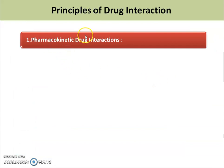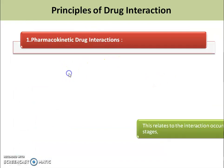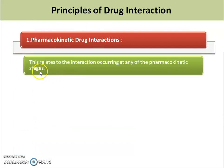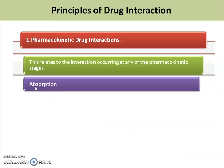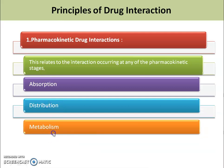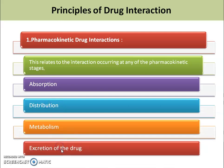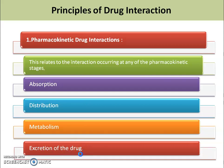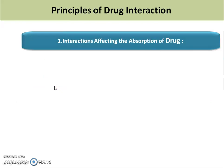First, we see the pharmacokinetic drug interaction. This relates to interactions occurring at any of the pharmacokinetic stages: absorption interaction, distribution interaction, metabolism interaction, and excretion drug interactions. Let's see one by one.